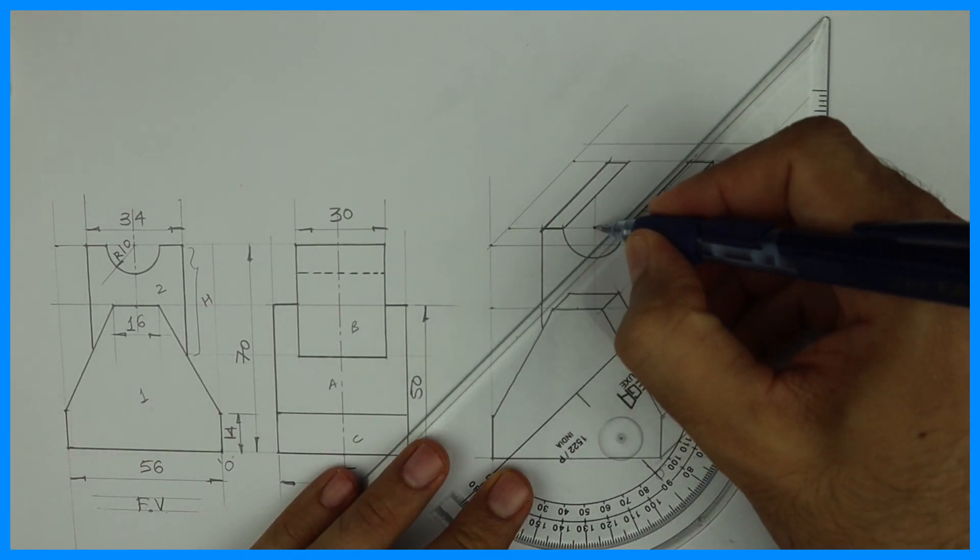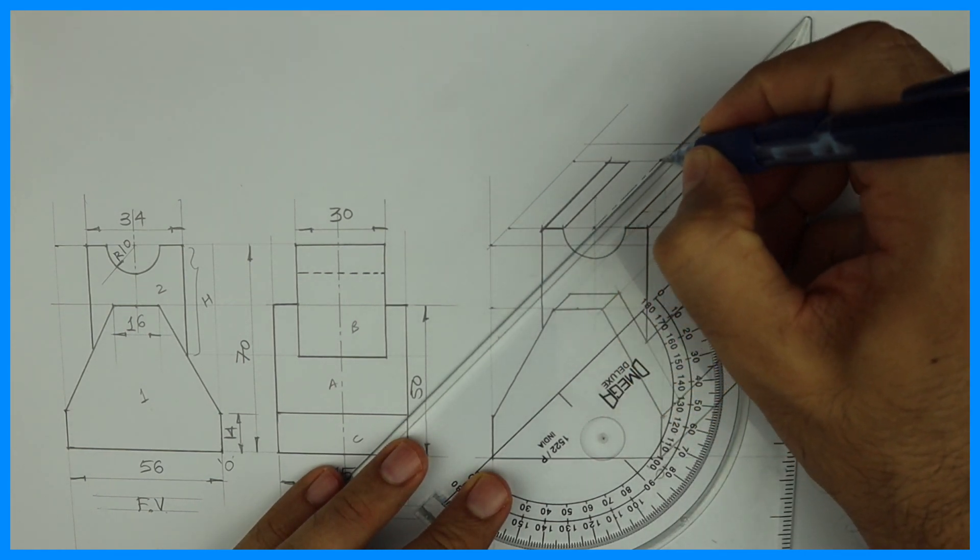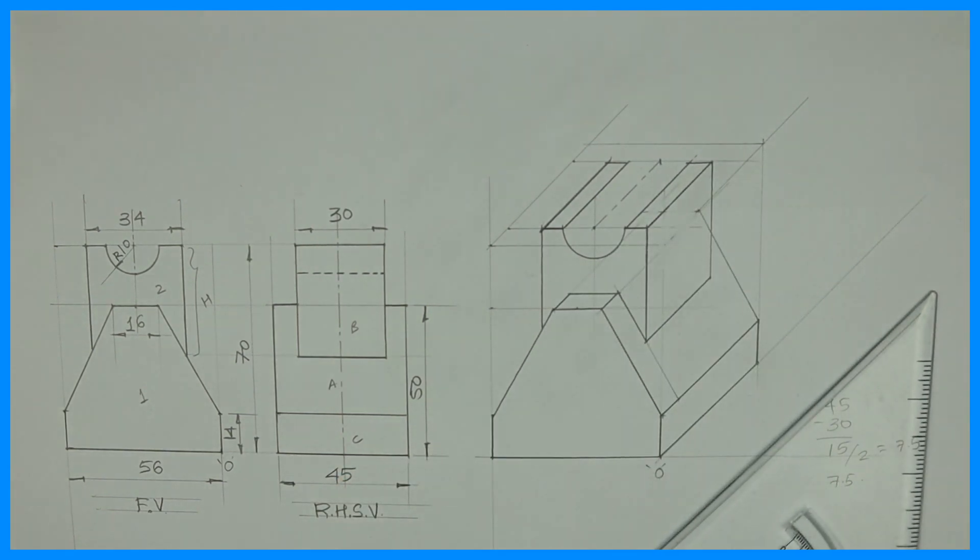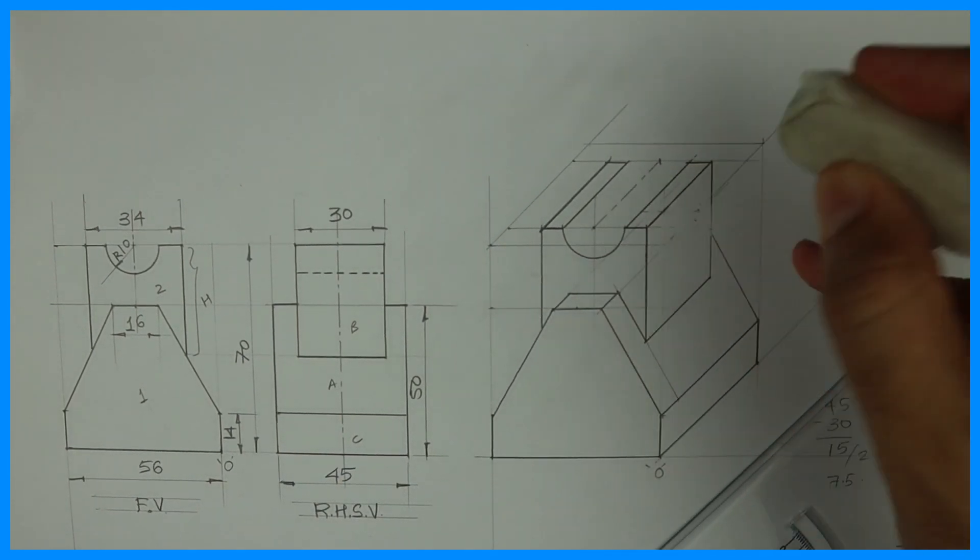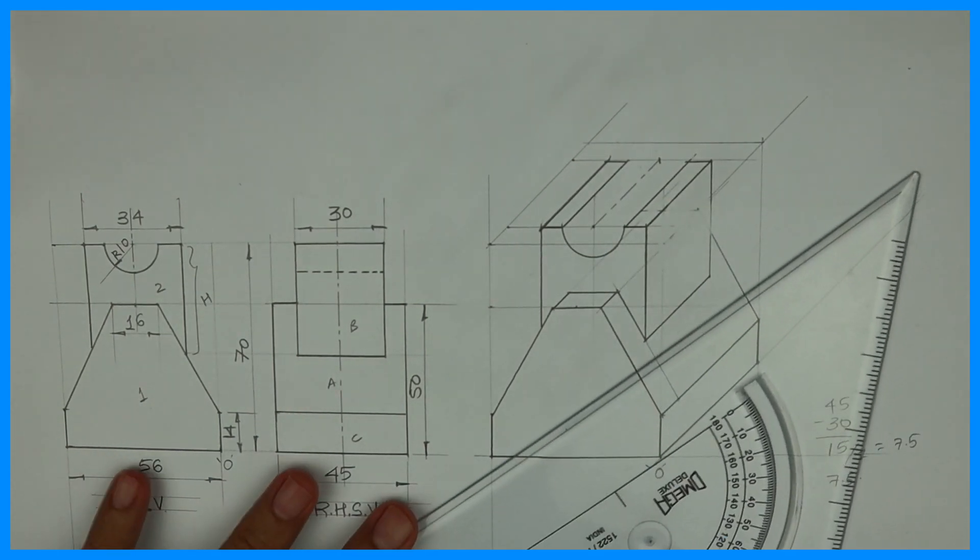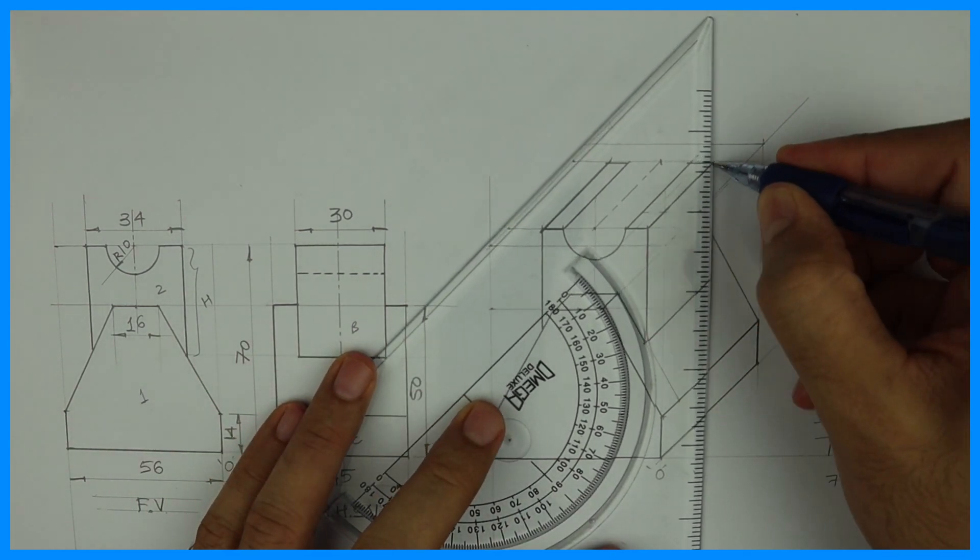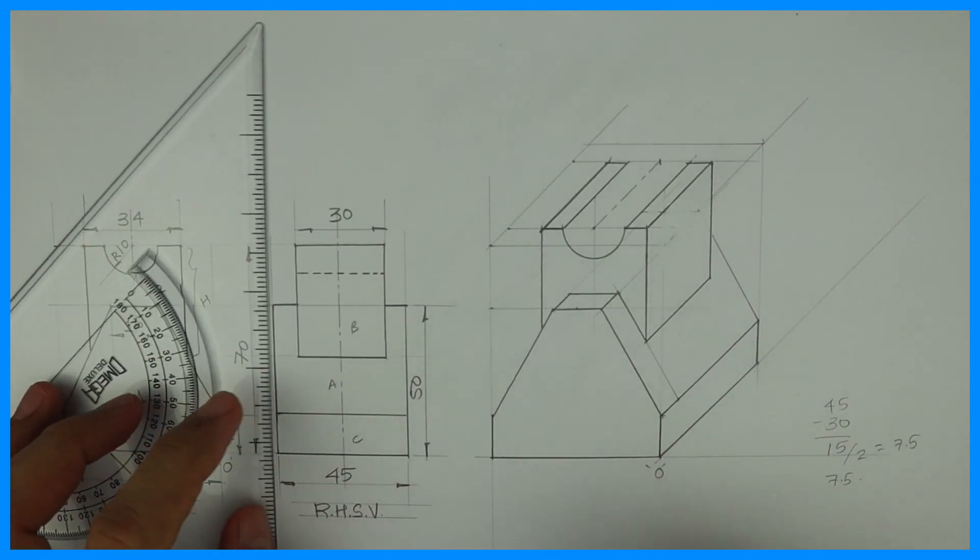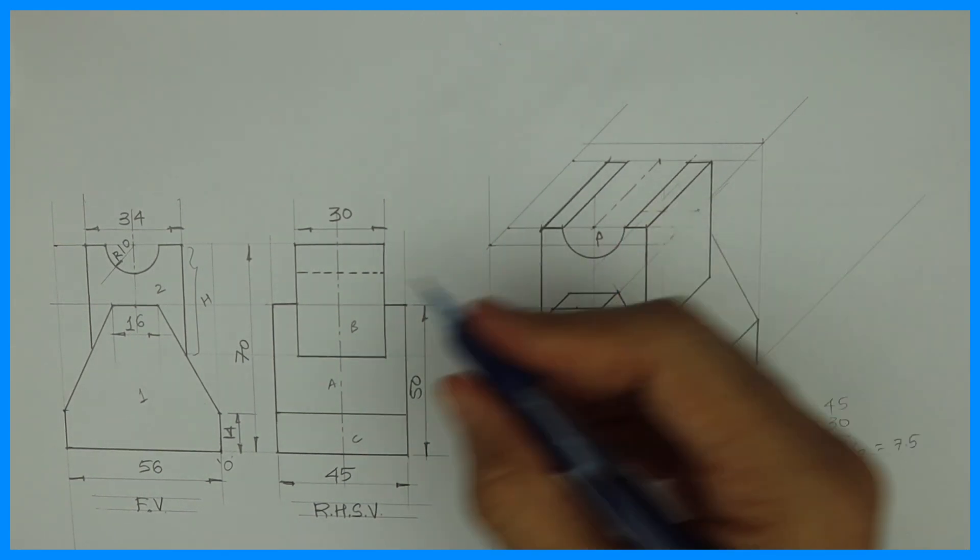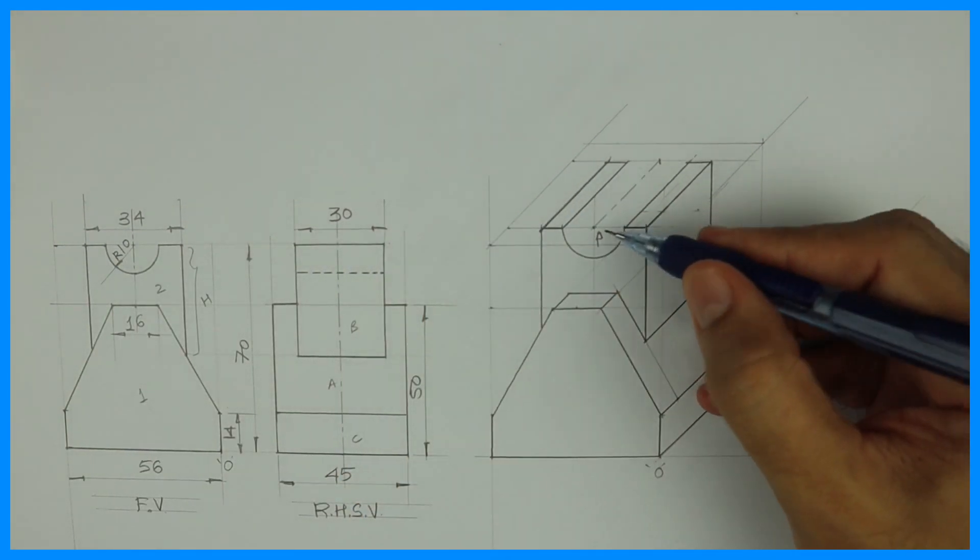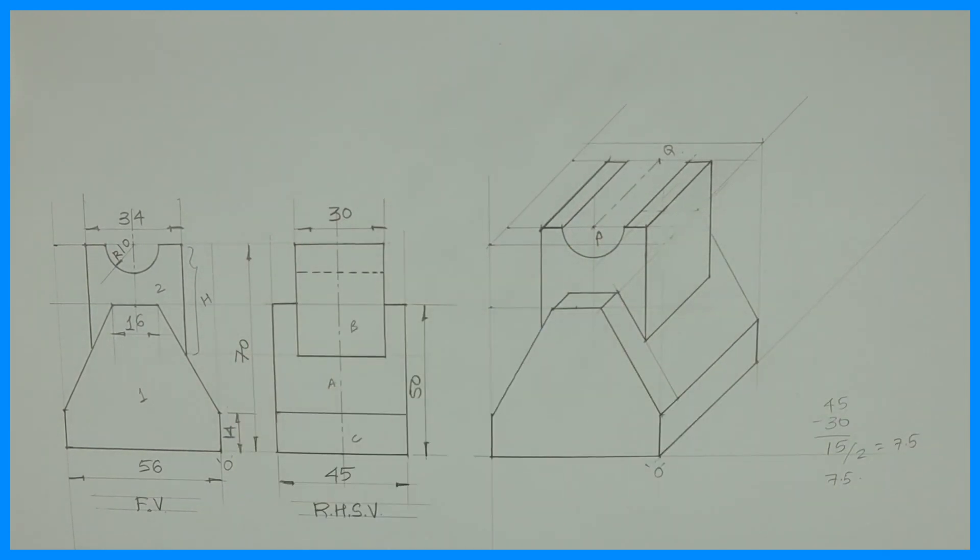After that, you can take that center point also behind by 30, and you can again draw radius 10. See this, this is point P. So from P you go behind by how much? 30. That is Q. And from there you can draw radius 10.